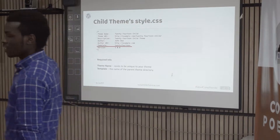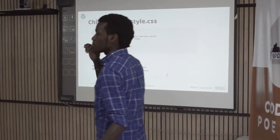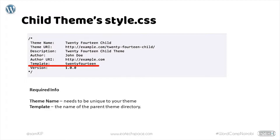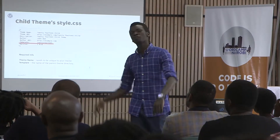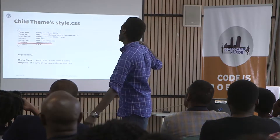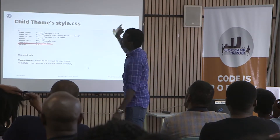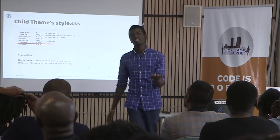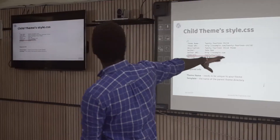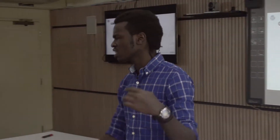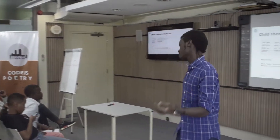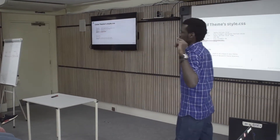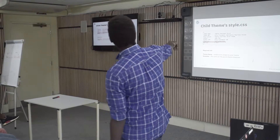The style.css file needs some details. The first thing is the theme name. The second thing is the template, which tells WordPress that this is a child theme of a certain parent theme. So if this is a child theme of the 2014 theme, you include the template name '2014', which you can find in your parent theme's style.css or functions.php.